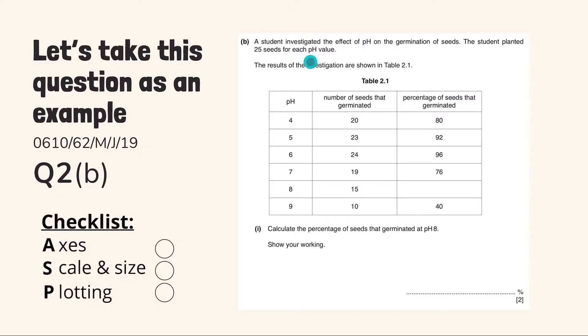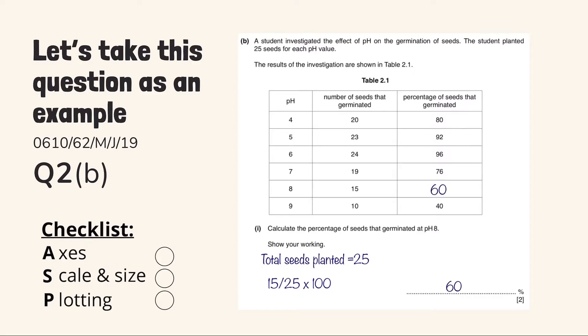So over here, we have the pH values and here we have the number of seeds germinated and these are their percentage. In part 1, it says to calculate the percentage of seeds that germinated at pH 8 and for us to show our working down below. So the total seeds that are germinated at pH 8 are 15. So we divide 15 by 25 and multiply it by 100 to get 60%.